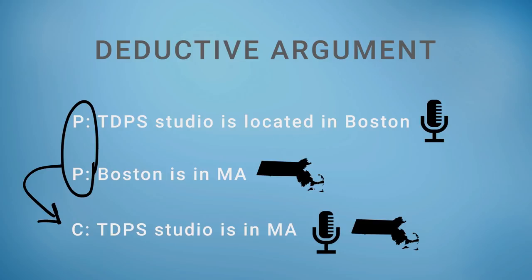It's a deductive argument because the premises expressed in the argument alone give you enough to determine — to deduce — the conclusion. The conclusion that our studio is in Massachusetts must follow from the premises that are given. No new premises that could be added to this argument could change its validity, and given these two premises, this will always be the conclusion.